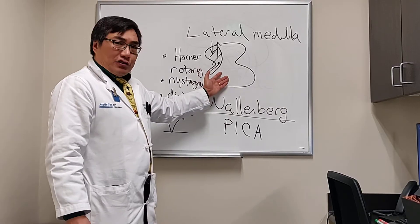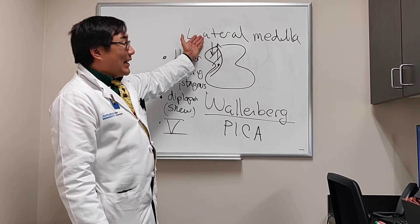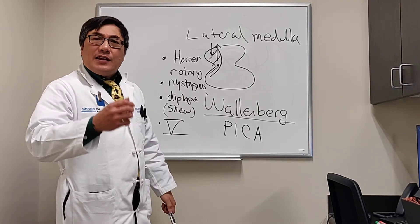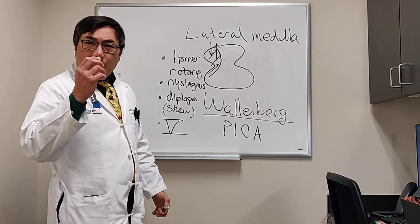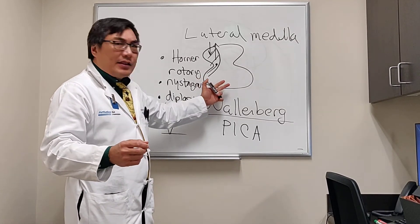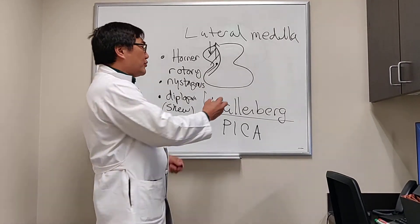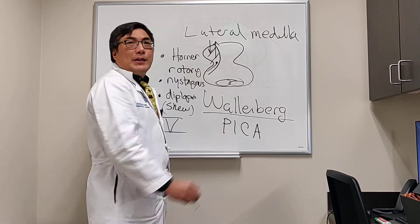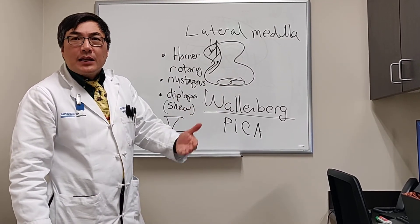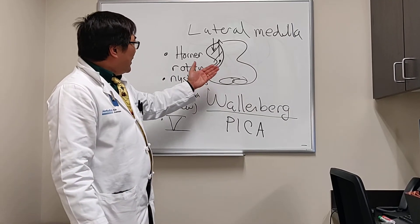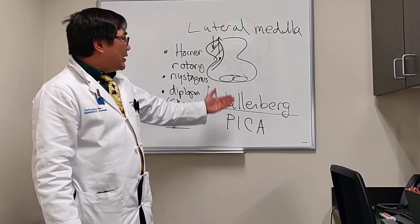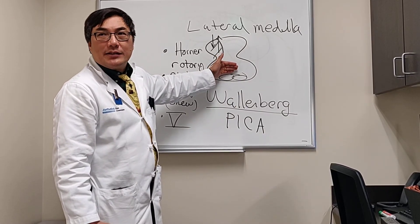The medial structures are spared in the lateral medullary syndrome. The medial structures include vibration, pain and temperature pathways, and the pyramids controlling the corticospinal tract. So we don't usually have hemiparesis, and we don't normally have damage to those other sensory modalities in the lateral medulla, because those would be medial medullary syndromes.